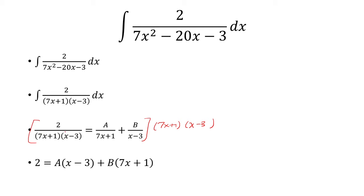So when that happens, the left side, the denominator gets cancelled, so we're left with 2. And then for A, the 7x plus 1 gets cancelled, and we're left with a factor of x minus 3. And then for B over x minus 3, the x minus 3 gets cancelled, and we're left with a factor of 7x plus 1.